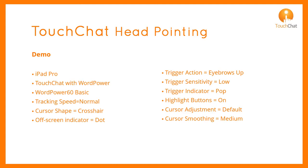My trigger action will be eyebrows up, with a sensitivity set to low. The trigger indicator will be a pop, and highlight buttons is on. Just before I start it, I tap default for cursor adjustment. The smoothing rate is medium.